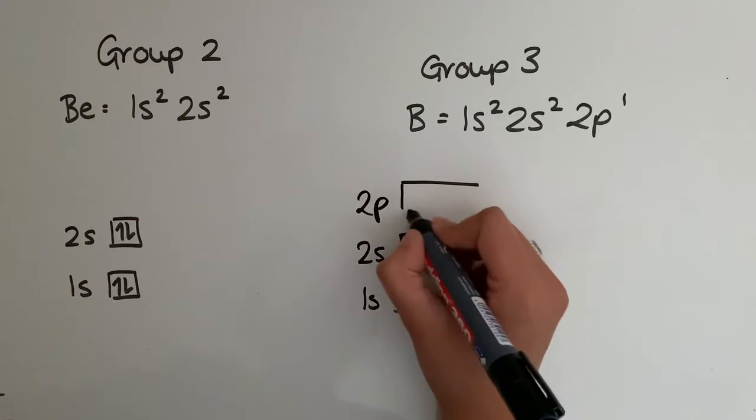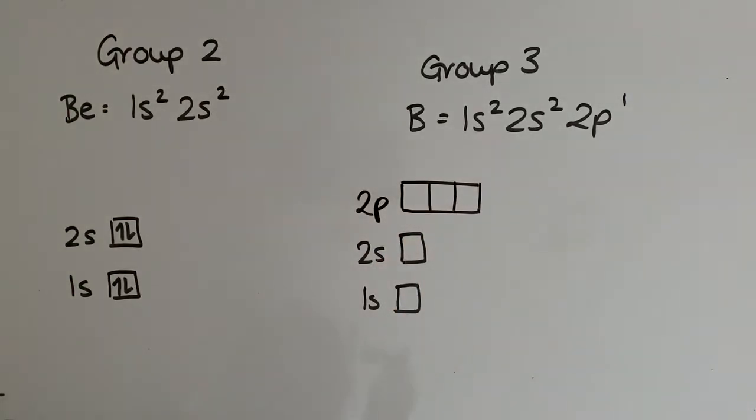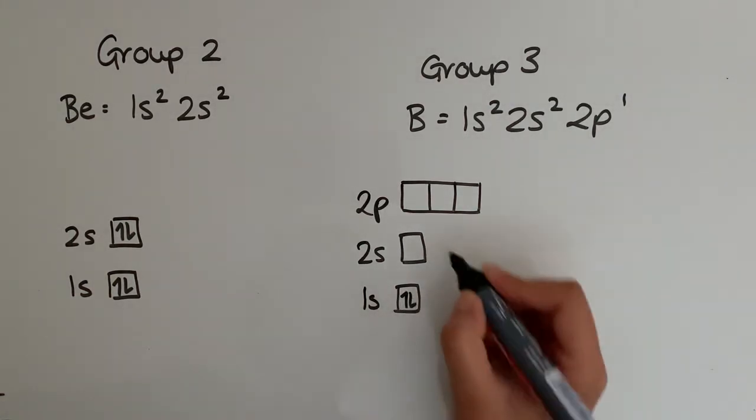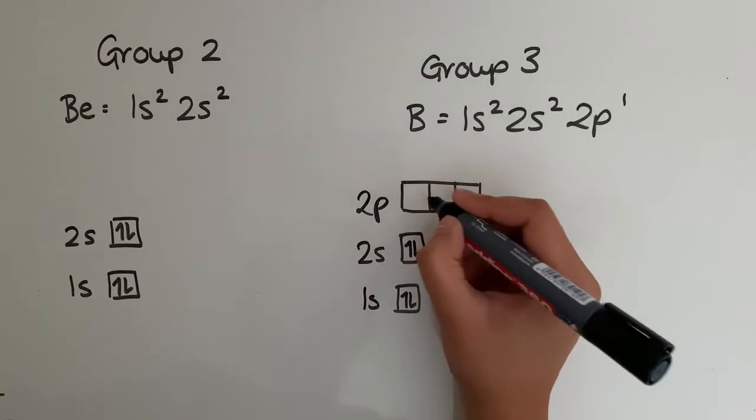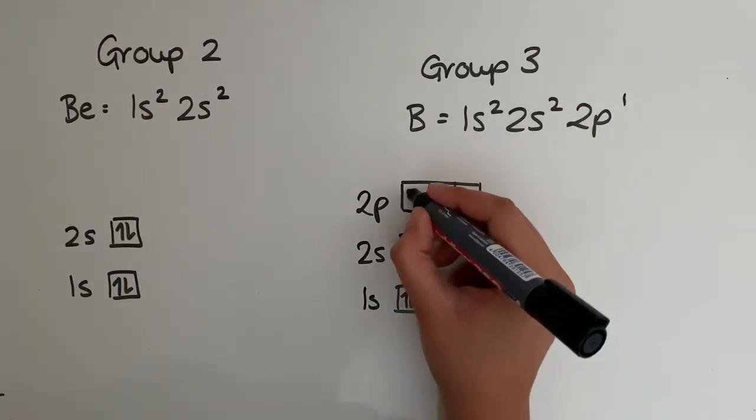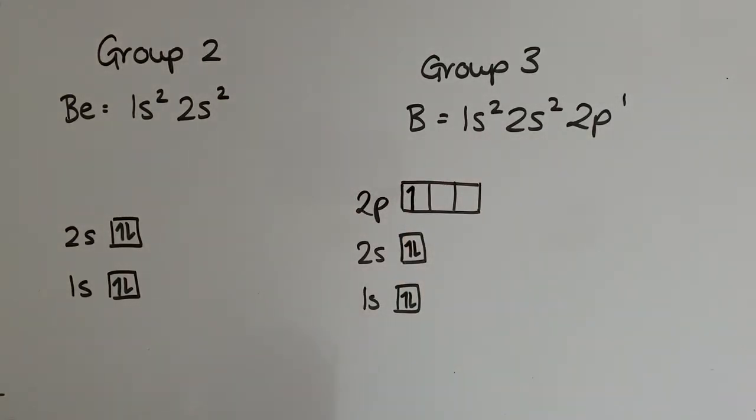For boron, we've got 1s, we've got 2s, and we also have 2p. If you remember, the 2p subshell has three orbitals because there's three p orbitals: px, py and pz. And filling those, we pair them up like that, and we've got a 2p¹ electron there.